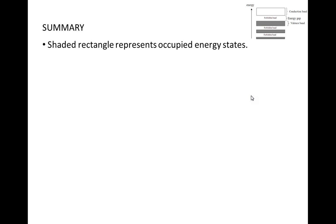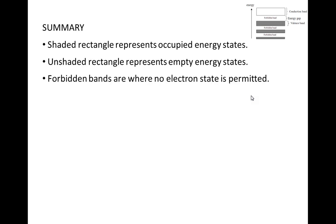So in summary, a shaded rectangle represents occupied energy states. An unshaded rectangle represents empty energy states. Forbidden bands are where no electron state is permitted. The higher the band, the greater the width of the band.